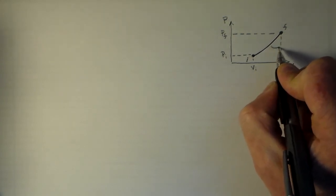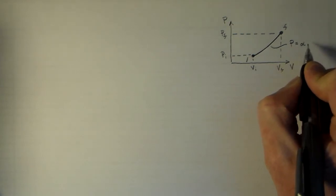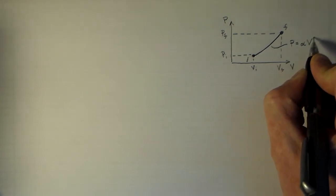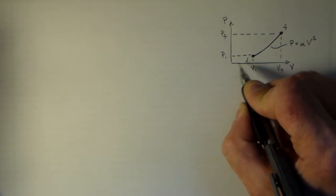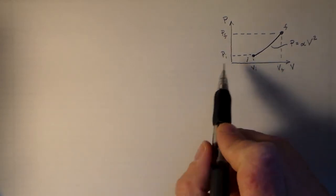So we're going to call this P is equal to alpha V squared. Okay, so that's roughly parabolic. That's the process that we're going to want to look at. So, let's see, how are we going to work with this? We're going to need to know several things.